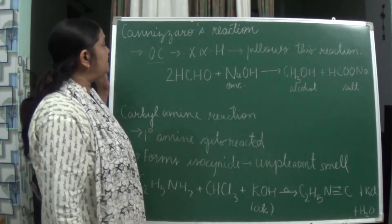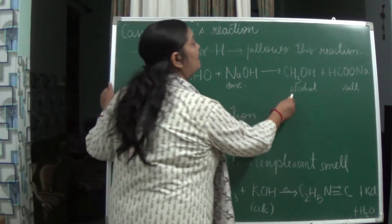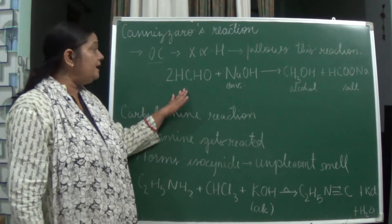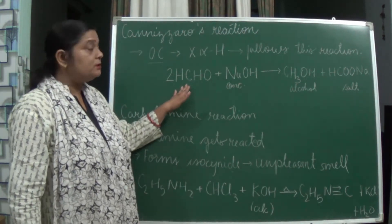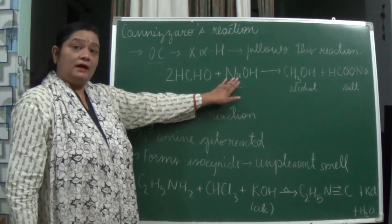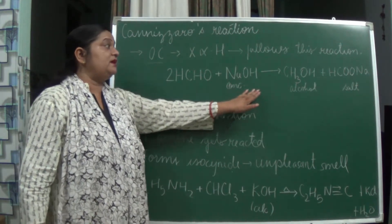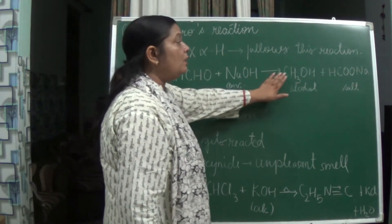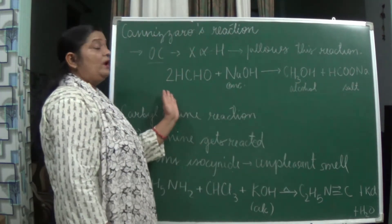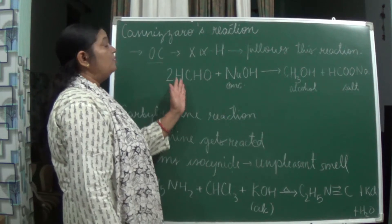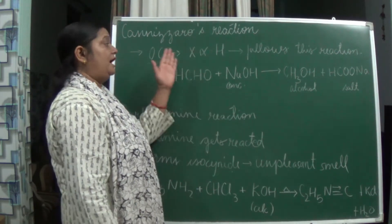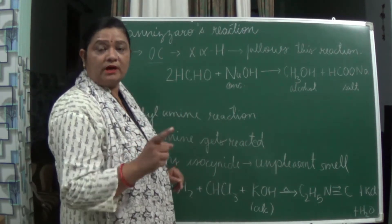The product we get in Cannizzaro's reaction is an alcohol and a salt. Here, formaldehyde (also called methanal) reacting with concentrated NaOH gives methanol plus sodium formate (sodium acetate). Remember: any organic compound where alpha-H is missing, when reacted with concentrated NaOH, gives a salt and an alcohol.